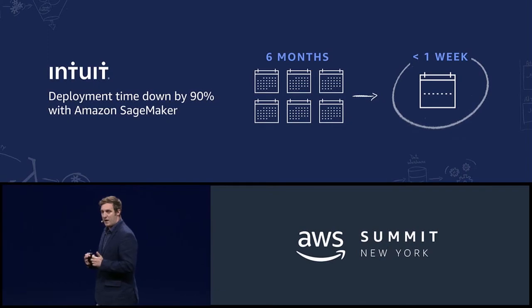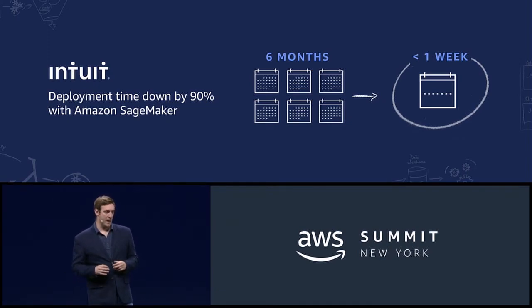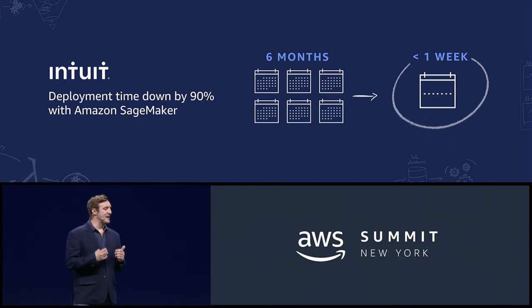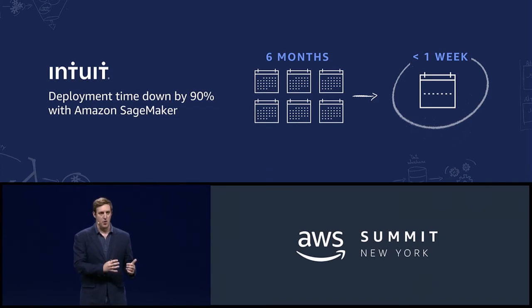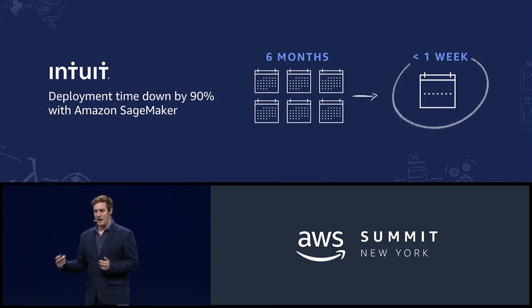Through all these capabilities — the training, the optimization, the hosting — we see a dramatic decrease in the time it takes customers to take their machine learning models, train them up, and put them into production. Intuit are running close to real-time fraud analytics driven by machine learning on their platform routinely. They were able to reduce their deployment time by 90% using SageMaker. It used to take them six months to build a model and get the first version into production. Now they can do it routinely in less than a week.